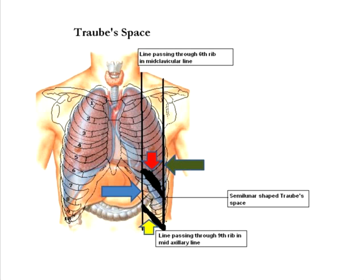The lower margin of Traube's space is formed by the left subcostal margin. This gives a semi-lunar shaped space which is bound on the right side by the mid-clavicular line, on the left side by the mid-axillary line, above by the line joining the sixth rib and the ninth rib in the two respective lines, and below by the costal margin. This space contains the fundus of the stomach and when percussed with the patient in a semi-recumbent position, it is supposed to be resonant.